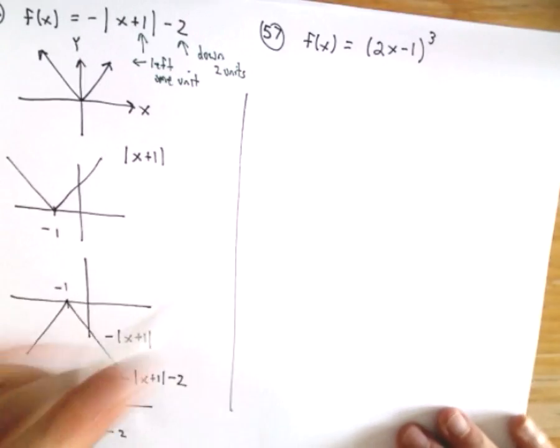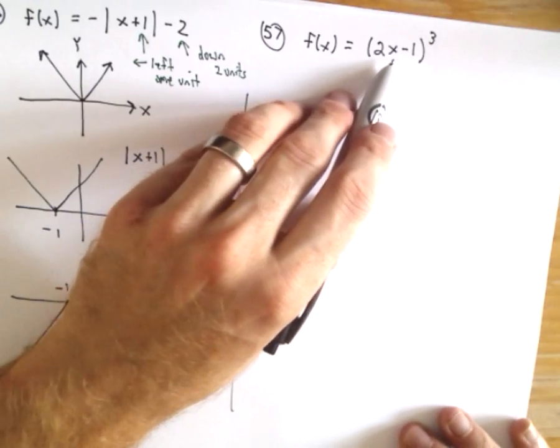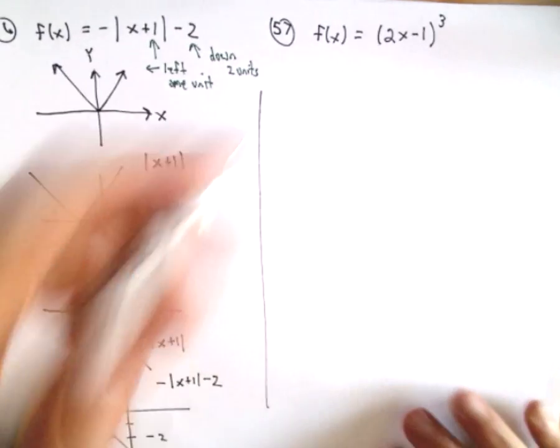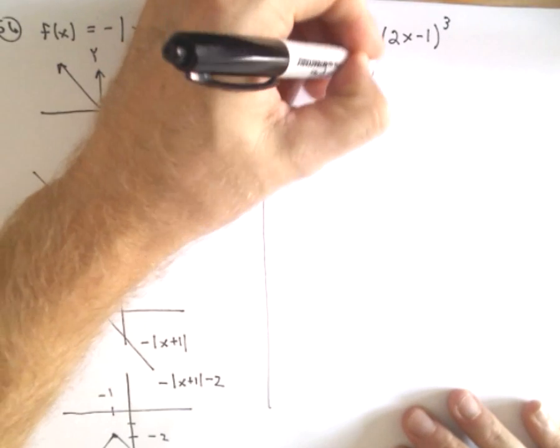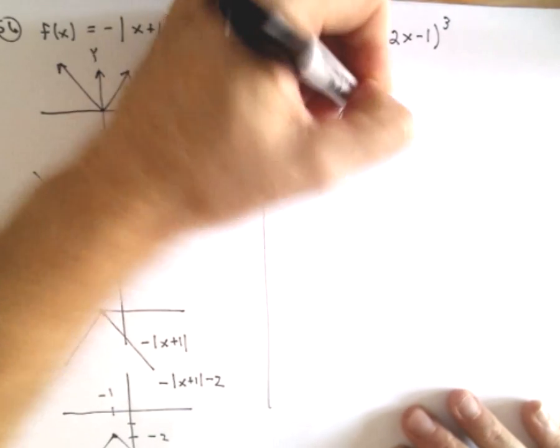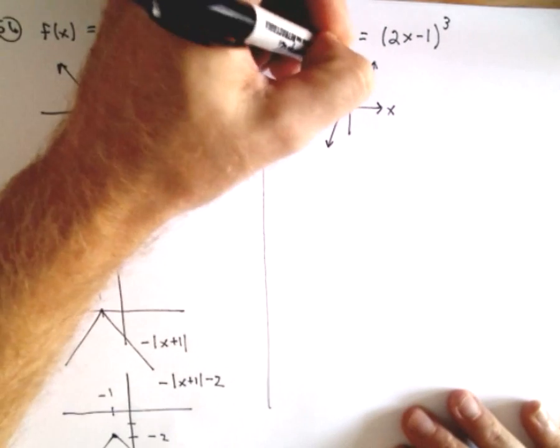Next we've got f(x) = (2x - 1)³. So I'm thinking about x³. Remember that x³ has that basic shape to it.